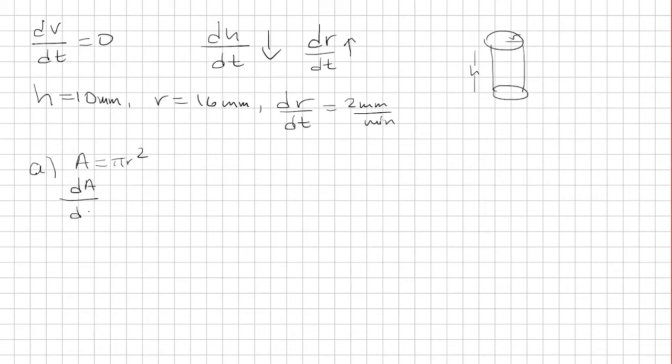So the derivative of that is what we're looking for, the dA/dt. That's just going to be 2πr dr/dt. Now we just plug in what we know. The radius was given to us at 16 millimeters and the rate at which the radius is increasing is 2 millimeters.